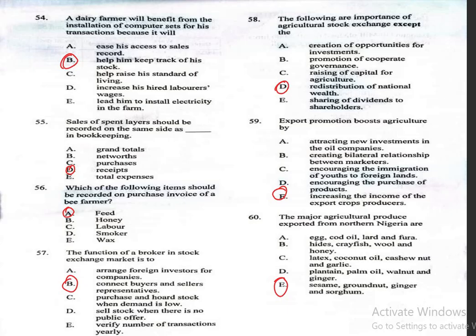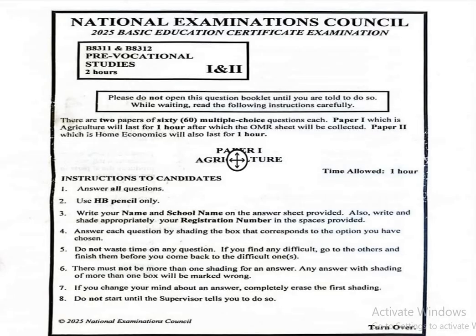We are done with everything about agricultural science. For those of you that have not seen lesson 1, you can go back and look at it — it's going to be very helpful. In the next lesson, we'll be looking at Paper 2 of Pre-Vocational Studies, which is Home Economics. See you then.